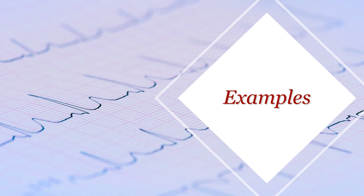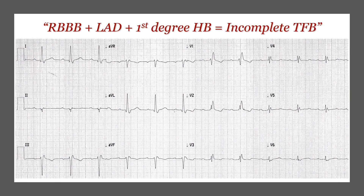Let's look at some examples. In this first ECG, we can clearly see a broad complex with a right bundle branch block pattern. The axis in lead one is pointing up and AVF is pointing down — that is left axis deviation. There is also a prolonged fixed PR interval and only one P wave visible before each complex. So that is a first degree block — this is an incomplete trifascicular block.